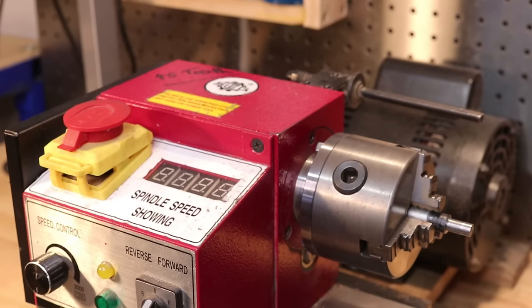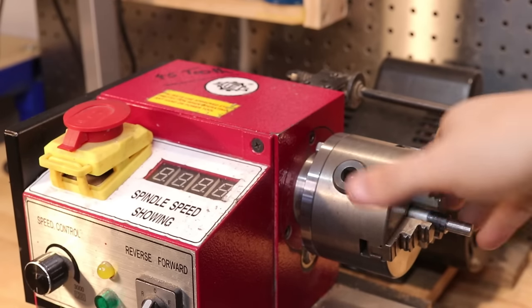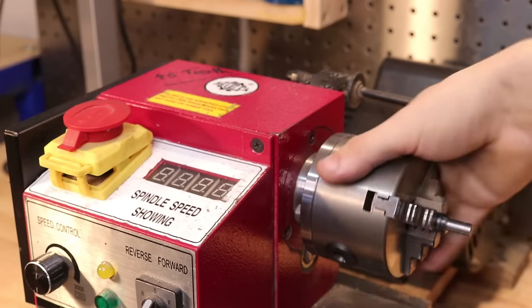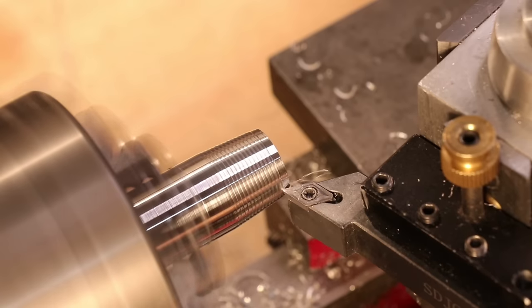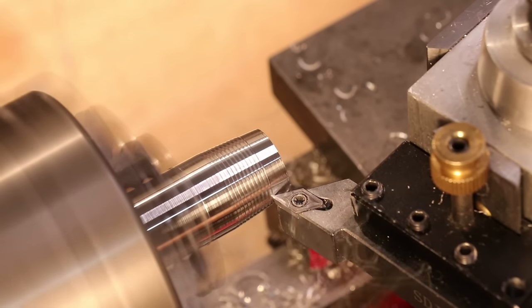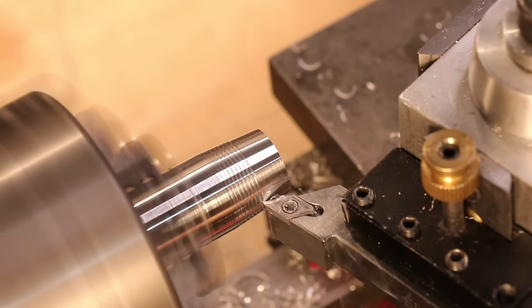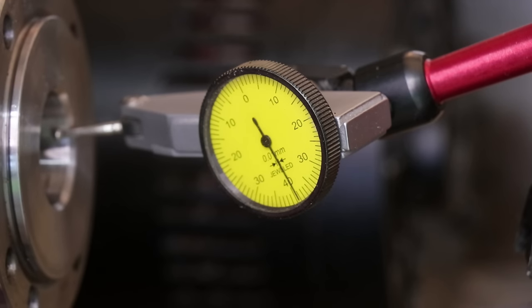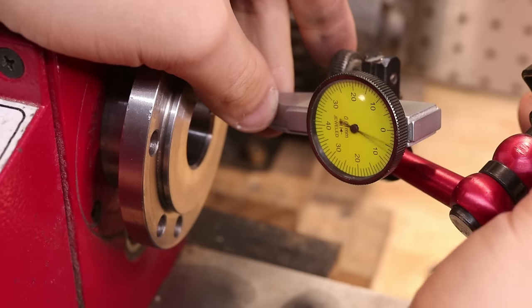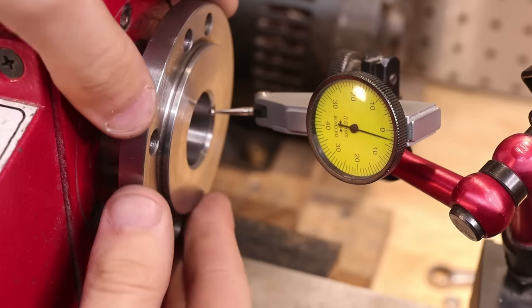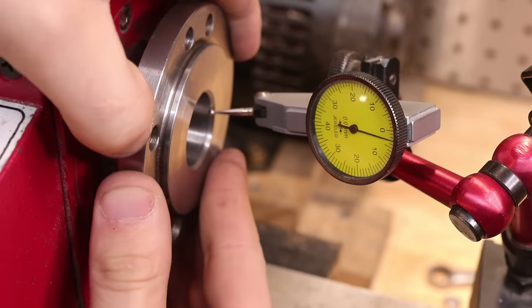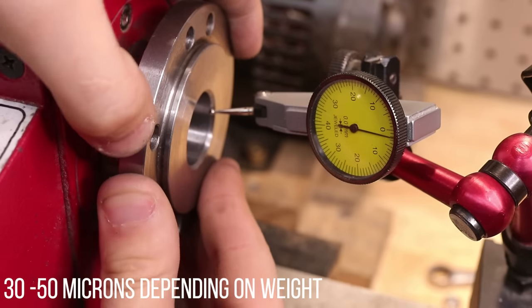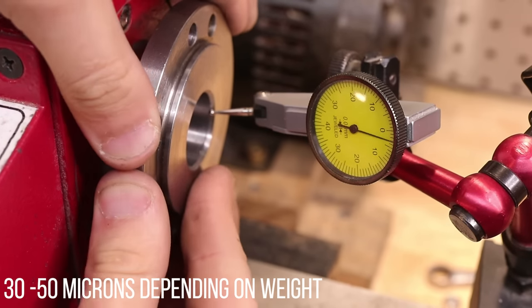The first area we need to address is the spindle bearings. They have two really critical jobs in a lathe: they need to hold and allow the spindle to rotate concentrically, and they need to resist loads generated by turning. As I've demonstrated in the past, the concentricity is still really good after two years, still registers under 10 microns. But the bearings' ability to resist cutting loads has declined over time. Pushing on it, we can see about 50 microns of movement from just my body weight.